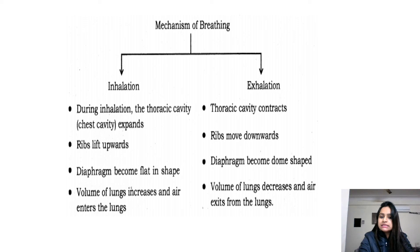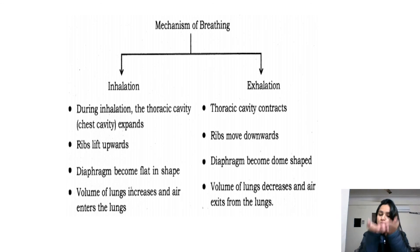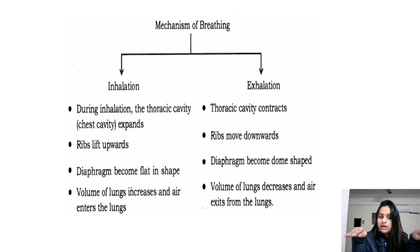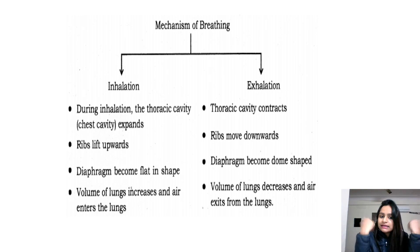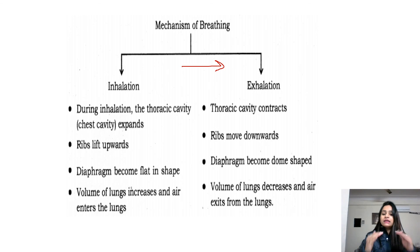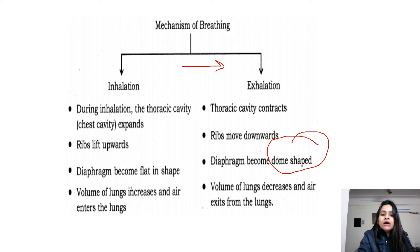During inhalation, the thoracic cavity expands, ribs move upward, the diaphragm becomes flat in shape, and the volume of the lungs increases as air enters. During exhalation, the thoracic cavity contracts, ribs move downward, the diaphragm becomes dome-shaped, and the volume of the lungs decreases as air exits.